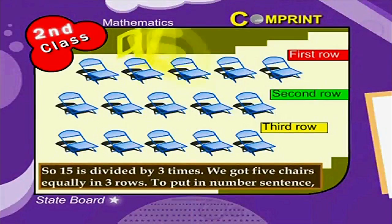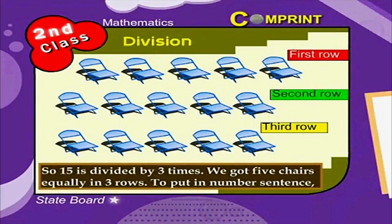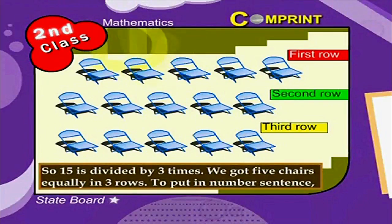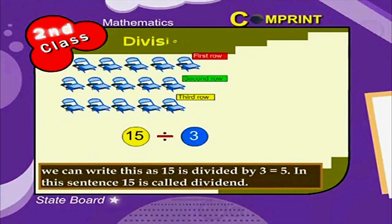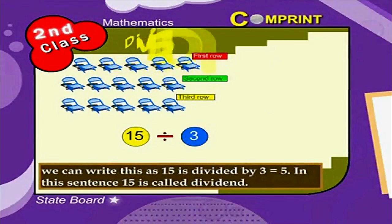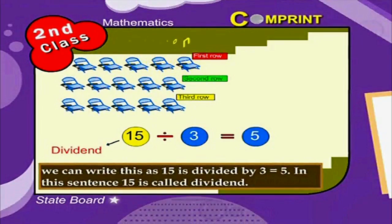So, 15 is divided by 3 times. We got 5 chairs equally in 3 rows. To put in number sentence, we can write this as 15 is divided by 3 is equal to 5.